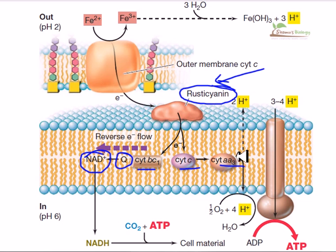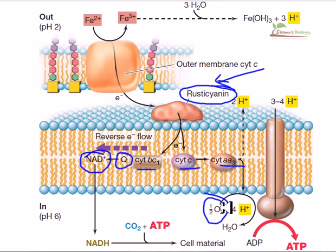From cytochrome AA3, the electron is passed out and taken up by oxygen, which is the terminal electron acceptor. Oxygen accepts the electron coming from cytochrome AA3 and converts itself into H2O — a water molecule.